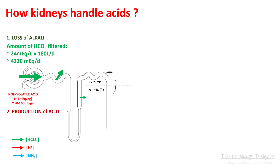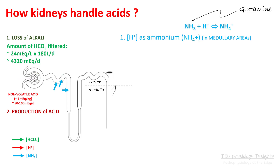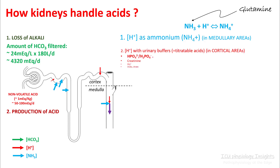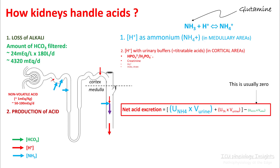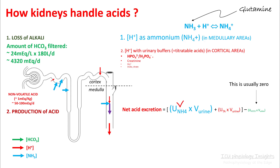The second thing is production of acid — these are non-volatile acids produced from your food and your metabolism. To get rid of this, your body has two mechanisms. First, it excretes hydrogen ions as ammonium ion. The ammonia needed for this is derived from the amino acid glutamine, and this is secreted in your proximal convoluted tubule, but the final ammonia trapping happens in your collecting ducts. You can also excrete hydrogen ions with urinary buffers such as phosphoric acid, creatinine, sulfate, urate, etc. These are also called titratable acids.